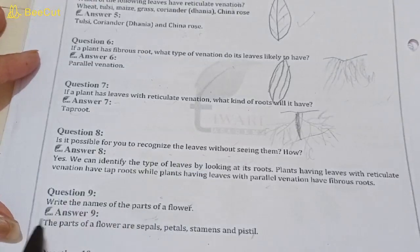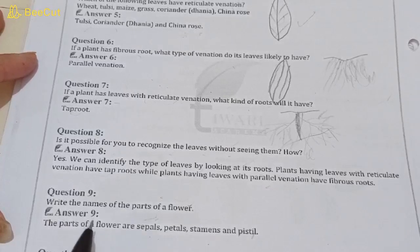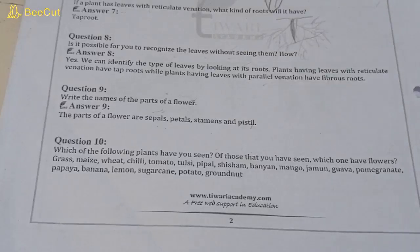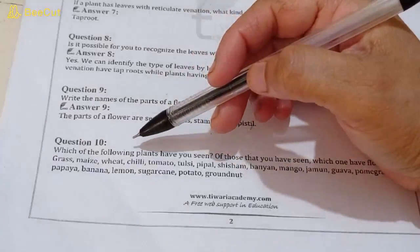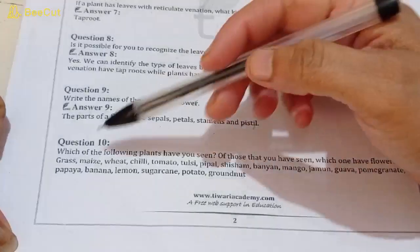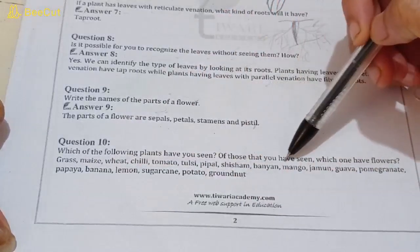Question number nine: write the names of the parts of a flower. The parts of a flower are sepals, petals, stamens and pistil. Question number ten: which one of the following plants have you seen, of those that you have seen, which ones have flowers? Grass, maize, wheat, chili, tomato, tulsi, peepal, shisham, banyan, mango, jamun, guava, pomegranate, papaya, banana, lemon, sugarcane, potato, groundnut.